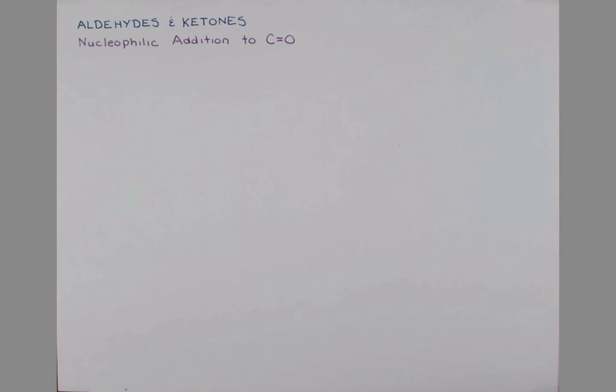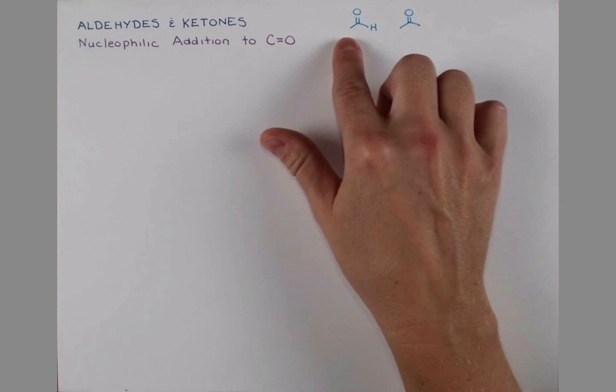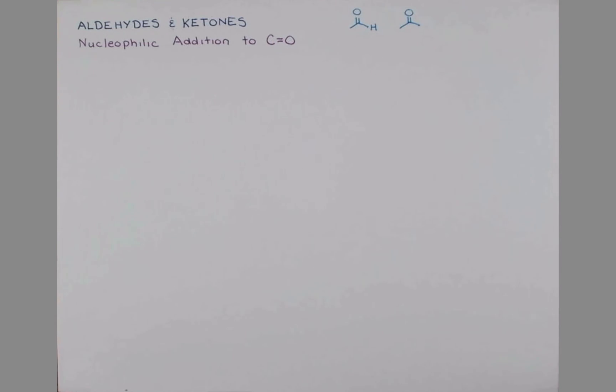Just to clarify, these are the functional groups that we're talking about today. We have our aldehyde with a hydrogen atom on one side of the carbonyl and a hydrocarbon group on the other side. I'm just showing a little stick here, but this needs to be carbon. And we have our ketone with two hydrocarbon groups, one on either side of the ketone.